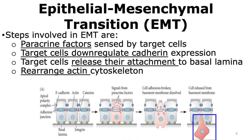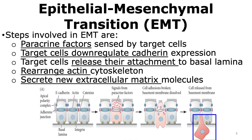Finally, there is rearrangement of the cytoskeleton, and this allows the cell to detach itself completely from the epithelial cells and start invading into the underneath layer. This mesenchymal cell will now secrete new extracellular matrix molecules characteristic of mesenchymal cells. In this way, an epithelial cell can be converted into a mesenchymal cell through the epithelial mesenchymal transition process.